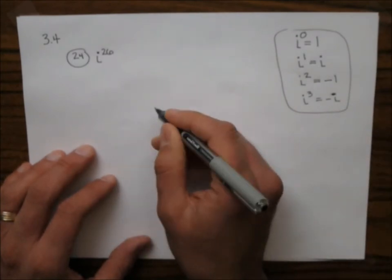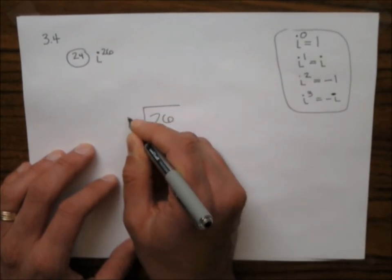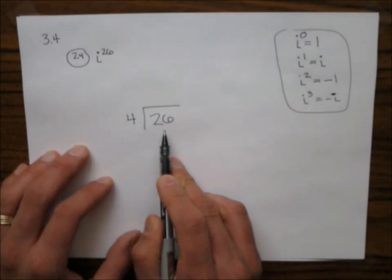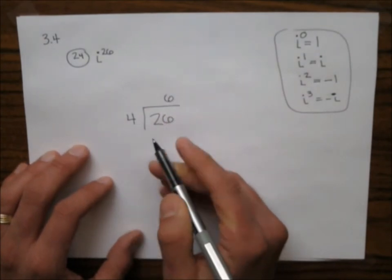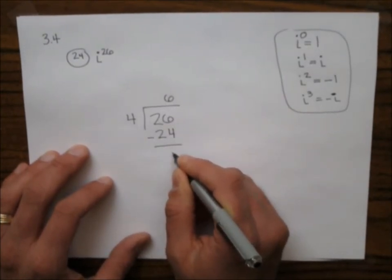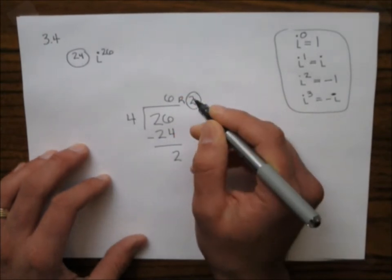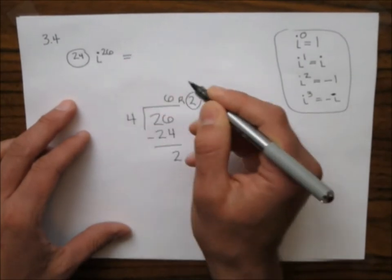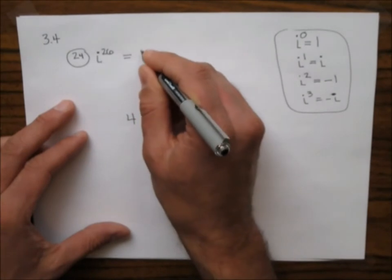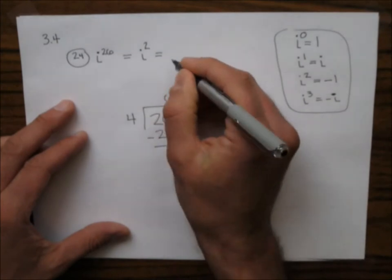The quick way of doing this problem is to take 26 and divide by 4. 4 goes into 26 six times — 6 times 4 is 24. We subtract and we get a remainder of 2. This is what we're paying attention to. So the fast way is: i to the 26th equals i squared, which equals negative 1.